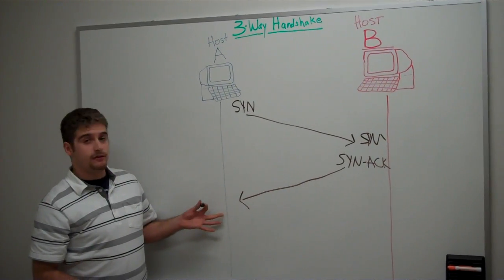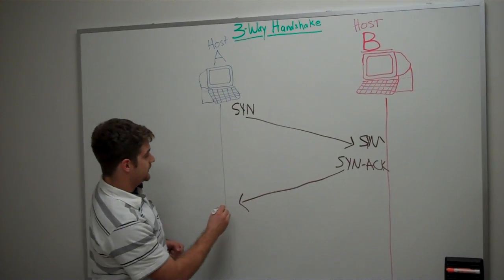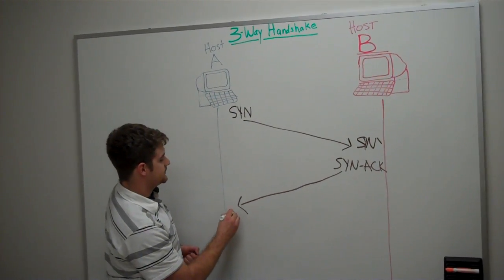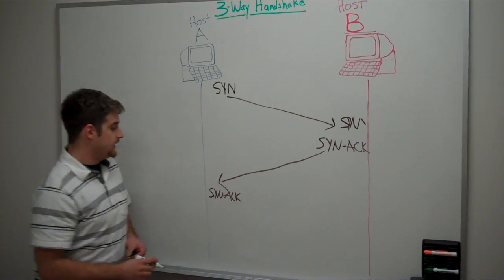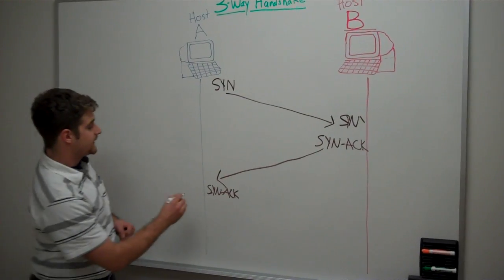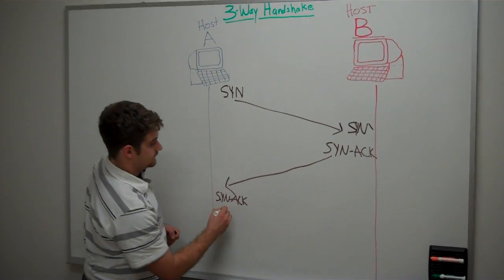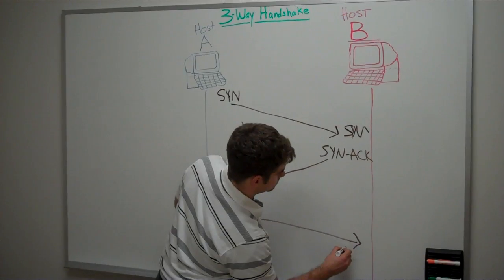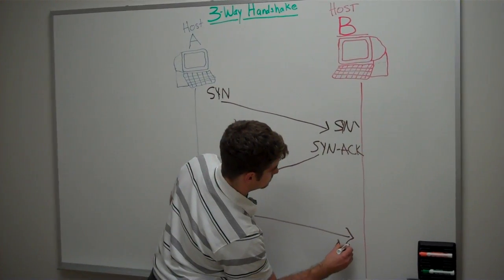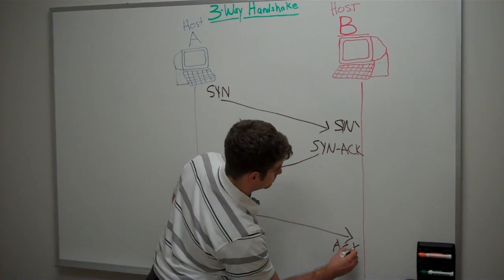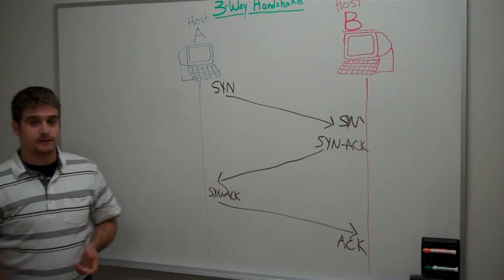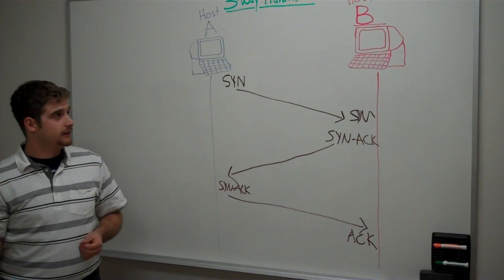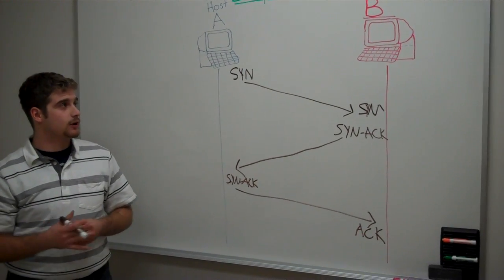And then host A receives it again. So he acknowledges that he receives the SYN ACK. And he's going to send back that he acknowledged it. At this point, there's a connection established here. And we can go back and forth.